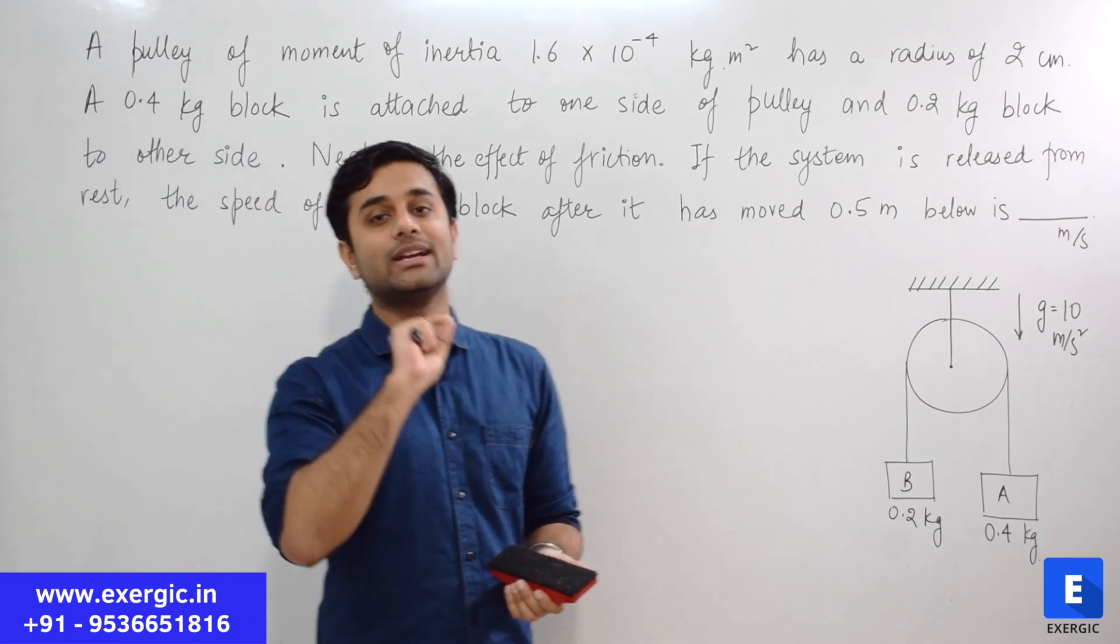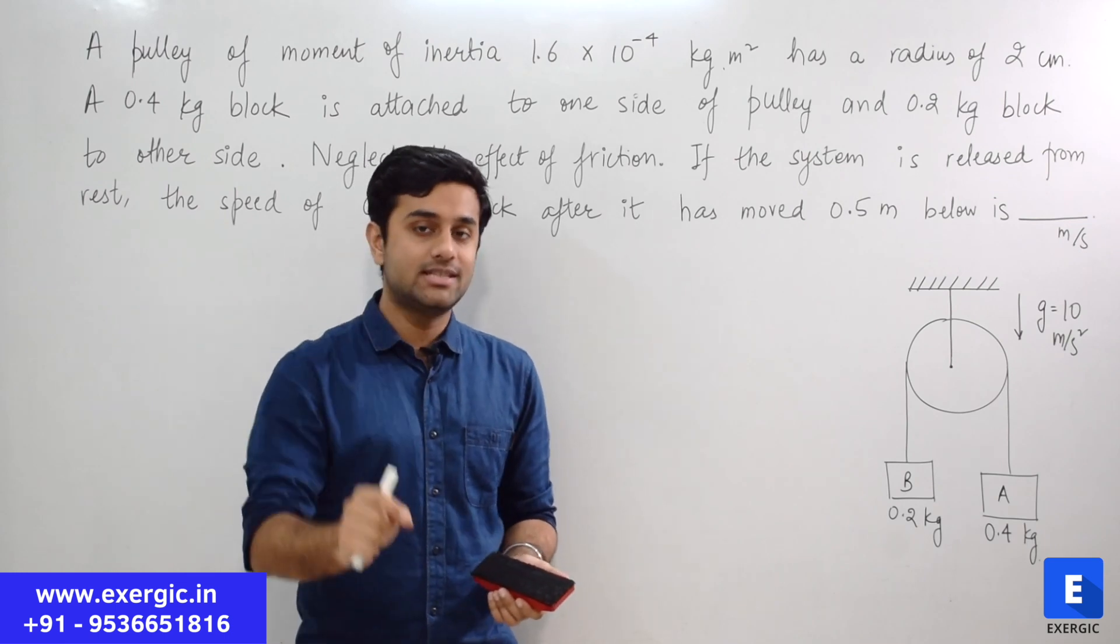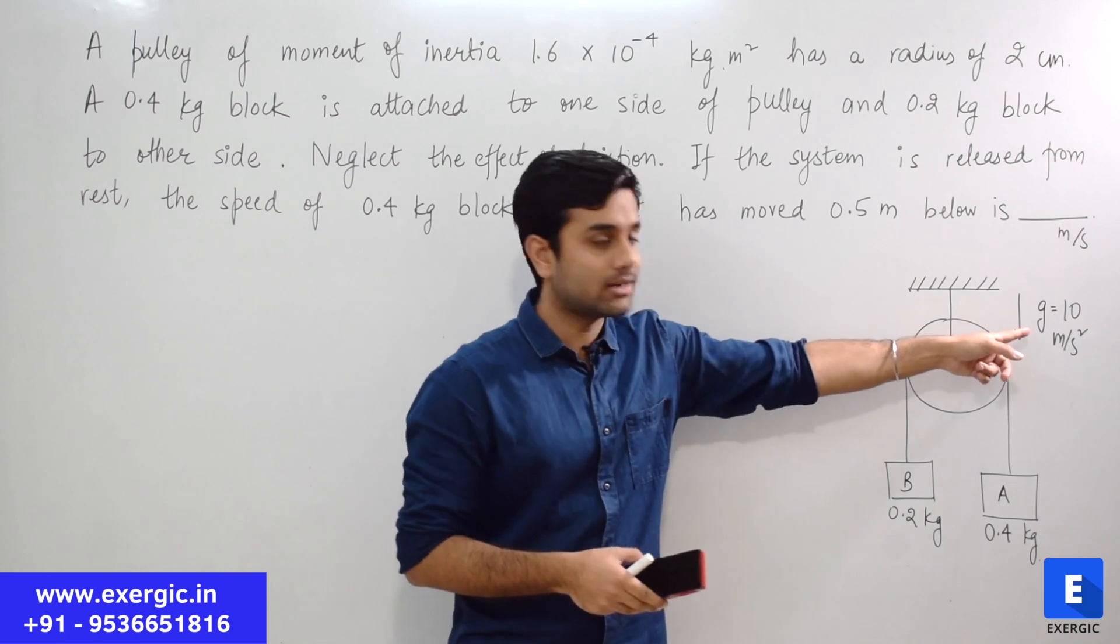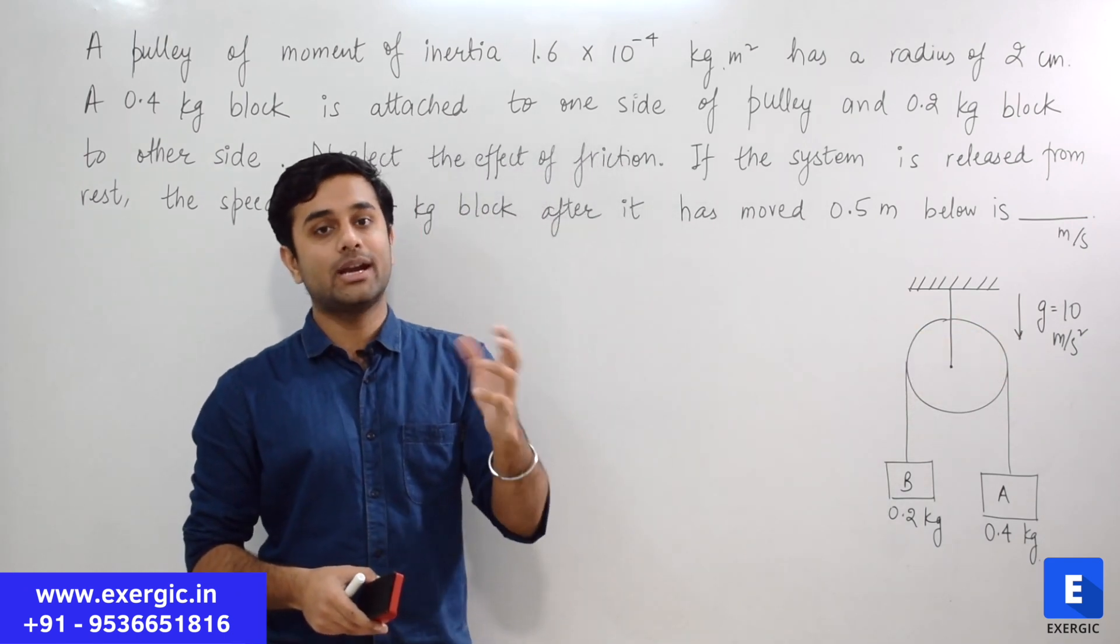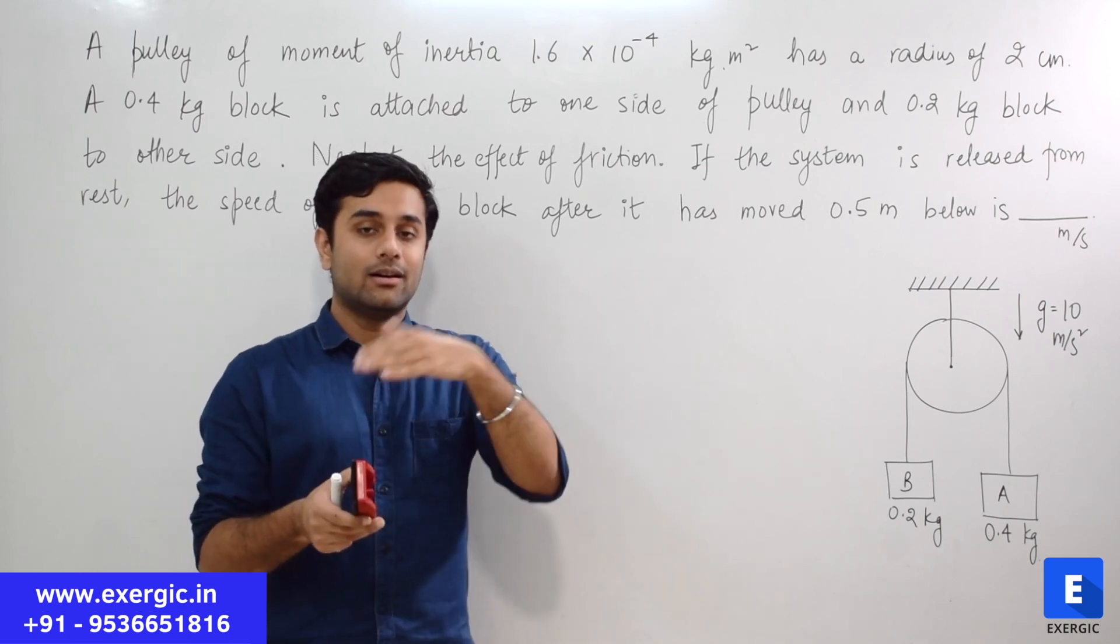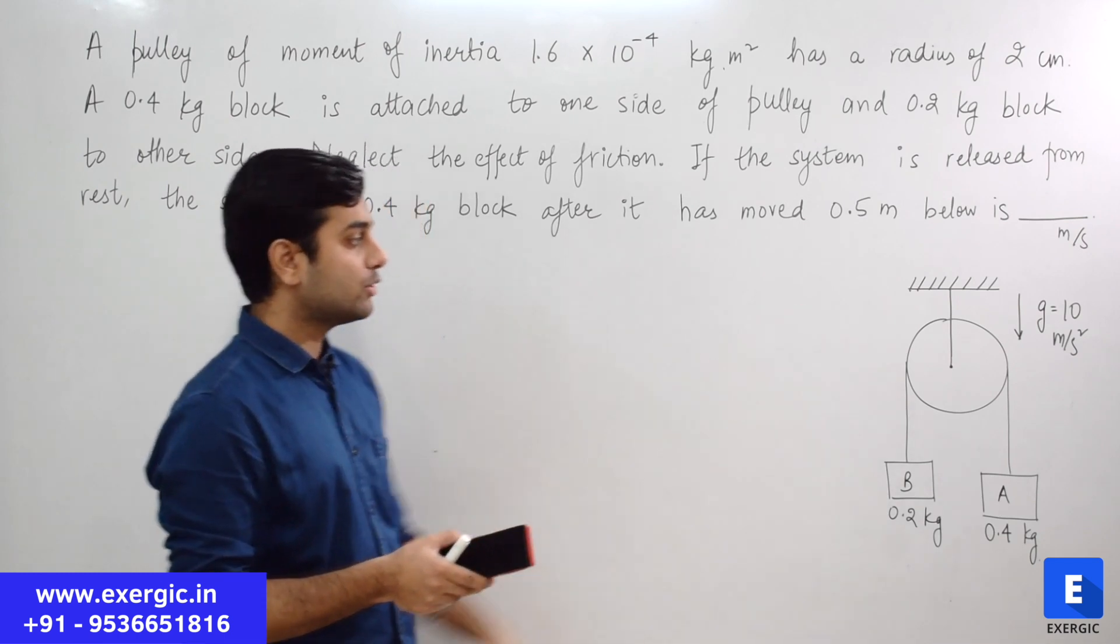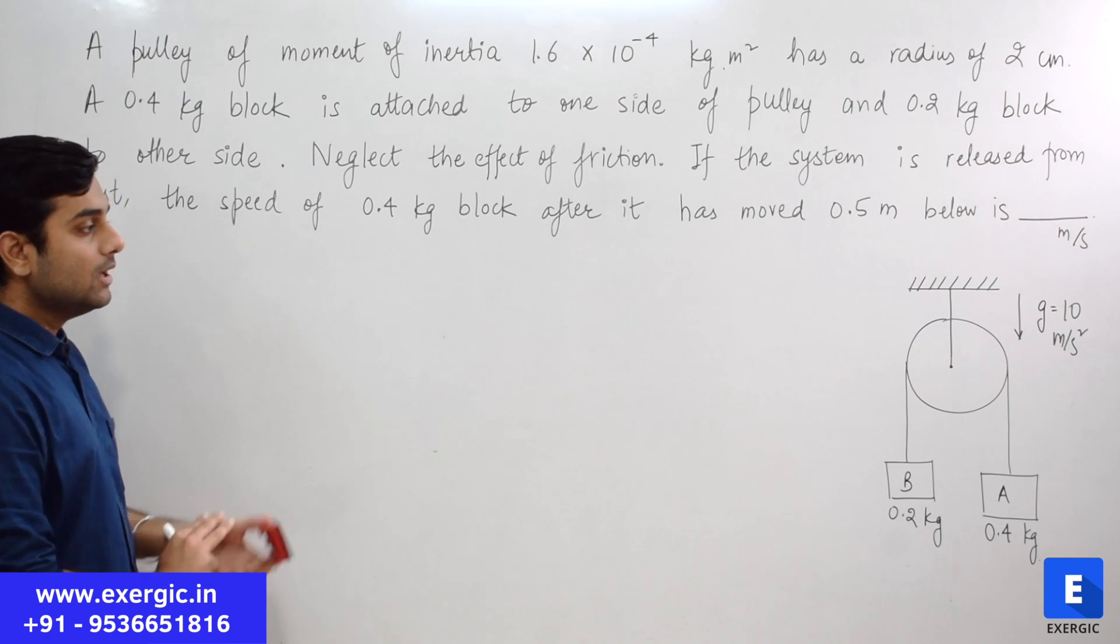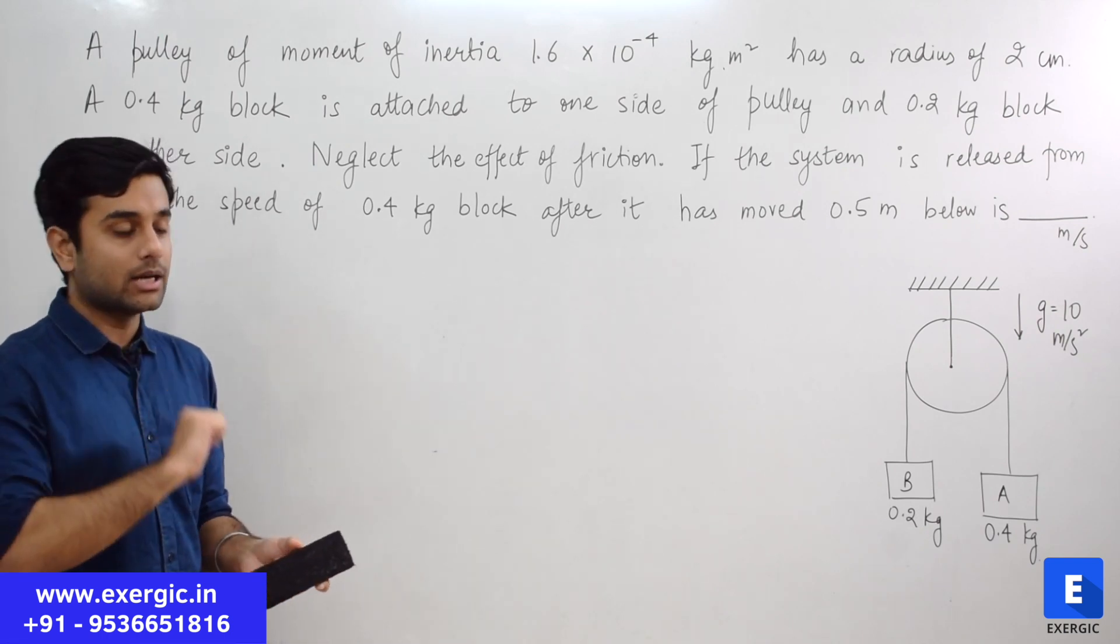One more small thing to notice here, as I keep telling you, the value of G. Question has not given it but diagram has mentioned it. G is equal to 10 meter per second square. Don't take 9.8 or 9.81. Your answer can move out of the given range. So be careful about these things as I keep telling you again and again.